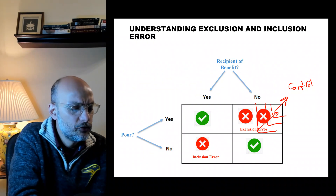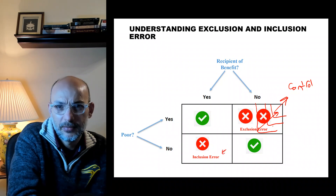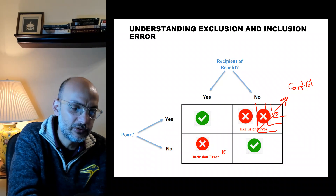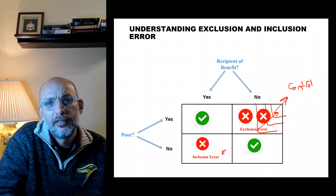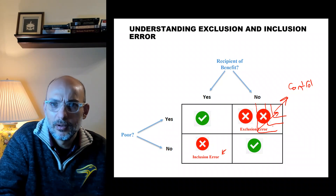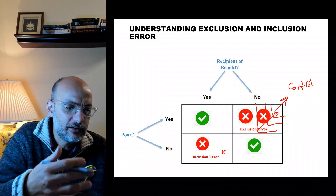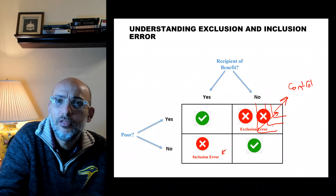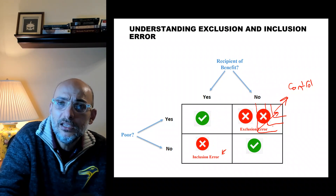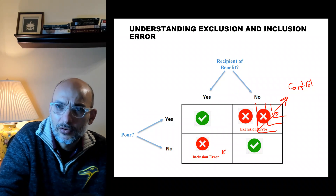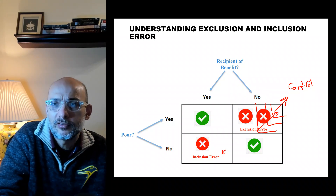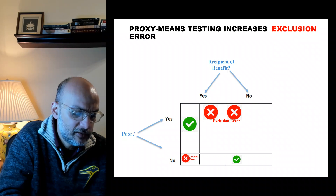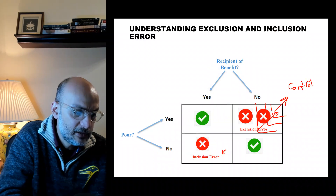It's bad, but we will find a way to minimize exclusion error and correct for inclusion error. The complexity of proxy means testing leads to high exclusion error. Remember: the poor don't have enough information or ability to deal with complex systems — they cannot produce the documents needed to be eligible. Lack of education translates into lack of ability to navigate the system, or they're simply unaware of it.